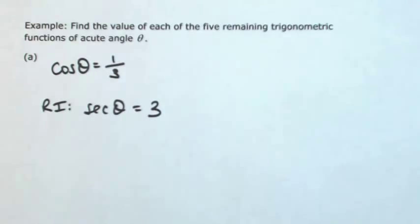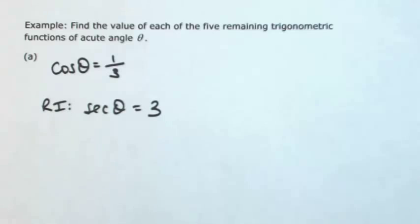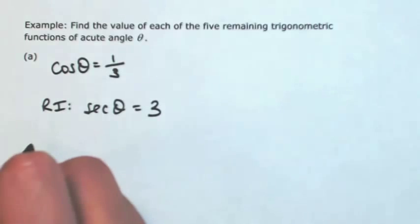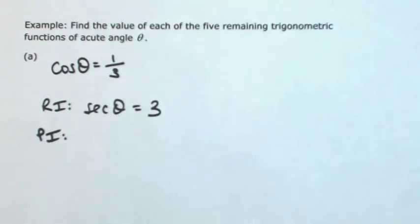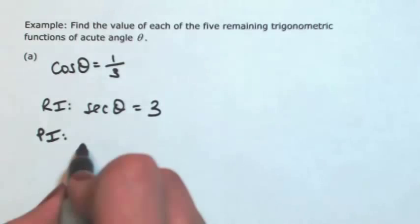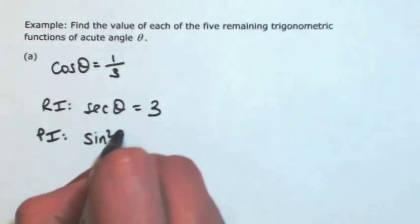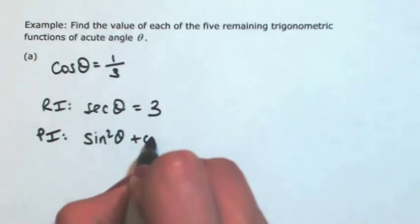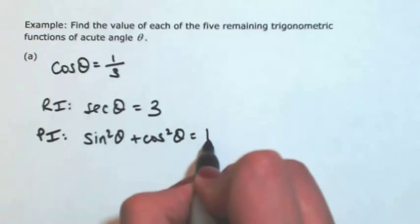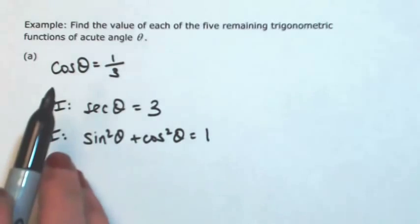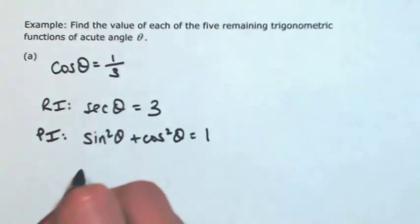There are no more reciprocals to find. Maybe we can use quotient identities, but in order to find the tangent of theta I would have to know the sine of theta, and I don't know that. So let me go to the next set of identities, which we call the Pythagorean identities. Involving cosine, we use sine squared theta plus cosine squared theta equals one. If I know cosine, I can find sine, so let's solve for sine.